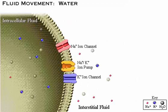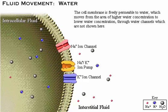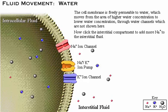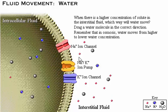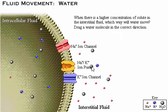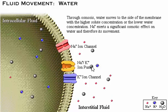These differences make the membrane potential possible and they facilitate a number of important physiological processes. We have seen how ions move across the cell membrane. Now let's look at water movement across the membrane. The cell membrane is freely permeable to water, which moves from the area of higher water concentration to lower water concentration. When there is a higher concentration of solute in the interstitial fluid, water will move from the inside to the outside of the cell. Through osmosis, water moves to the side of the membrane with the higher solute concentration or the lower water concentration. You can see how sodium exerts a significant osmotic effect on water and therefore affects its movement.